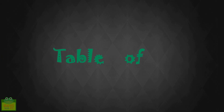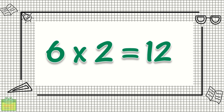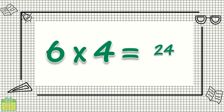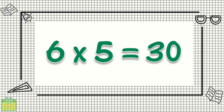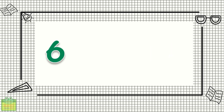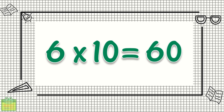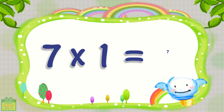Table of 6: 6×1=6, 6×2=12, 6×3=18, 6×4=24, 6×5=30, 6×6=36, 6×7=42, 6×8=48, 6×9=54, 6×10=60. Table of 7: 7×1=7.